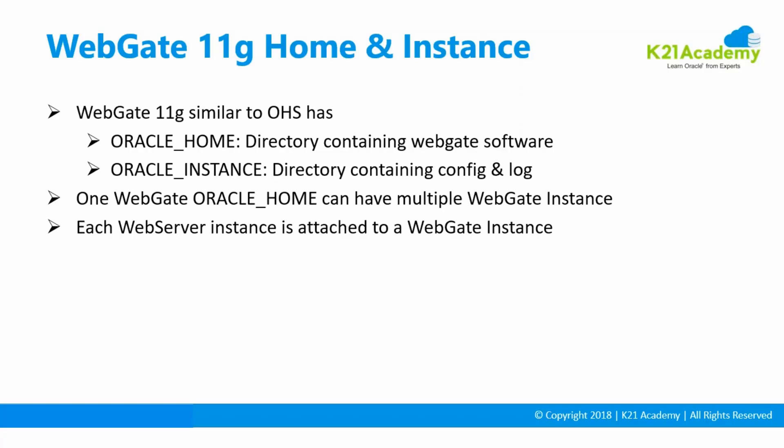Each web server will be attached to a WebGate instance. If you have two machines with HTTP servers for high availability doing the same thing, you create just one WebGate instance on the OAM server and the same WebGate will be attached to the two HTTP servers. However, if you have two HTTP servers - one for eBusiness Suite and one for OBI or another application - then each web server maps to a different WebGate instance.